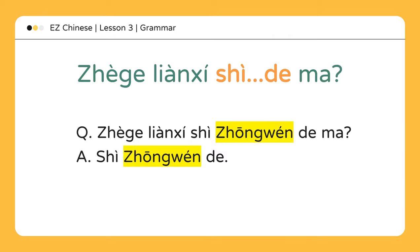这个练习是noun的吗? This sentence pattern emphasizes the noun between 是 and 的. Here are five languages: 中文 (Chinese), 英文 (English), 德文 (German), 法文 (French), and 日文 (Japanese).